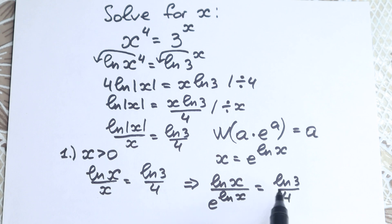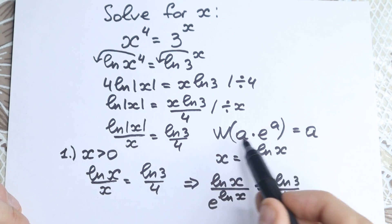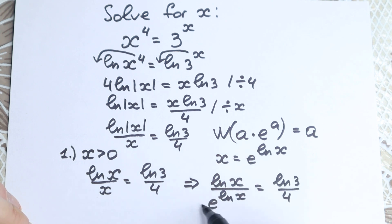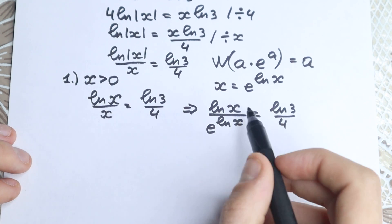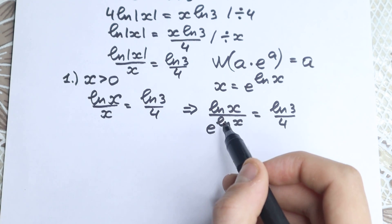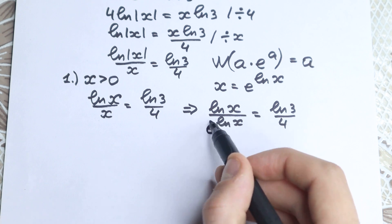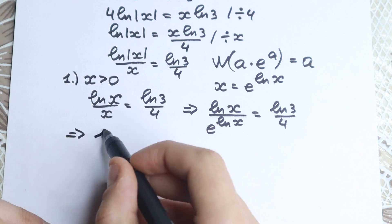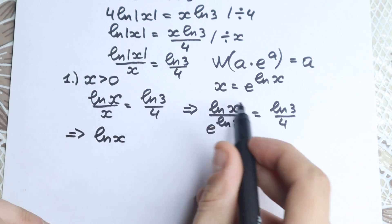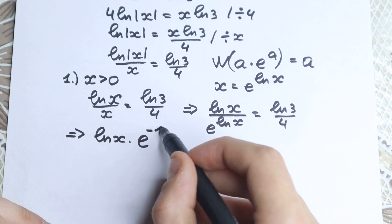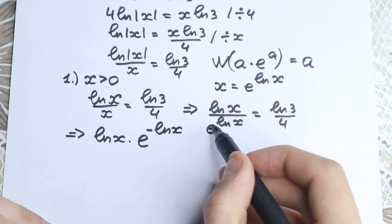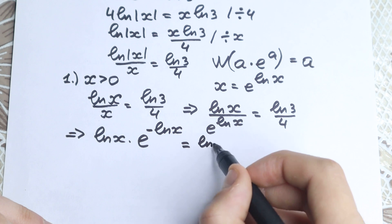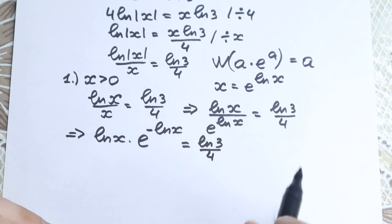Now let's bring the e term from the denominator to the numerator. Moving something from denominator to numerator means putting a minus sign in the exponent. So we have natural log x times e to the power minus natural log x, equal to natural log 3 over 4.